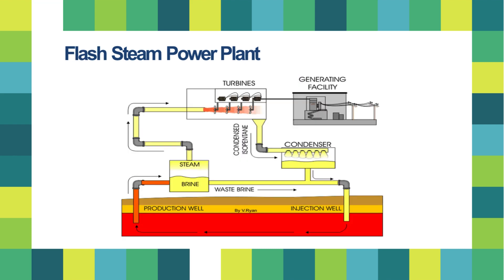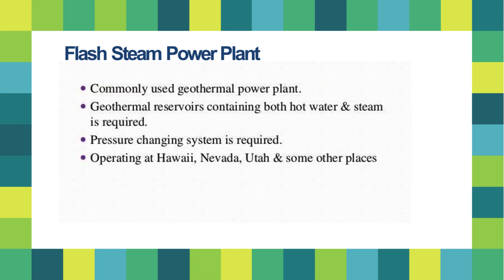Flash steam power plants, shown in the figure below, are the most commonly used geothermal power plant. They require geothermal reservoirs containing both hot water and steam, as well as a pressure-changing system. These plants operate in Hawaii, Nevada, Utah, and some other places.